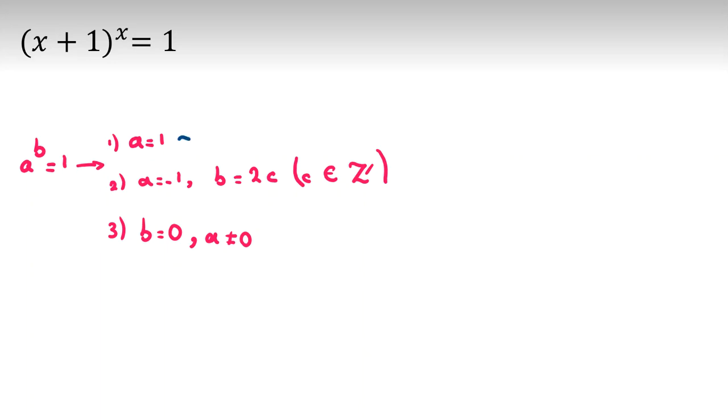Case 1, if a equal to what? Here, a is x plus 1. So x plus 1 equal to 1. So x, if we subtract both sides by 1, x will be 0.